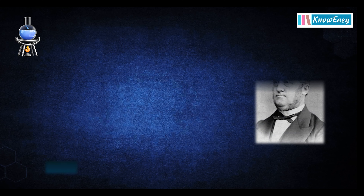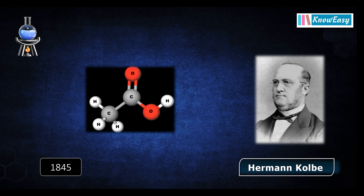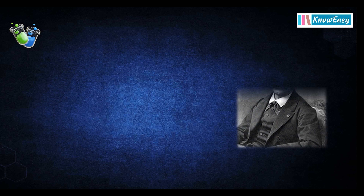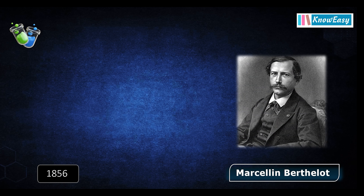This groundbreaking experiment marked the rise of synthesis in organic chemistry. Moving into the 19th century, chemists started isolating and characterizing various organic compounds. In 1845, the eminent chemist Herman Kolbe synthesized acetic acid in the lab, which was usually derived from fruits like grapes and apples. This was followed by Berthelot's synthesis of methane. It was believed until 1856 that methane came from living organisms, but scientist Berthelot synthesized methane in 1856.